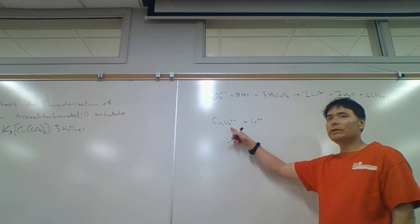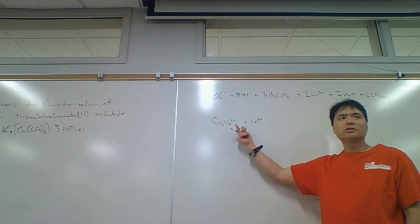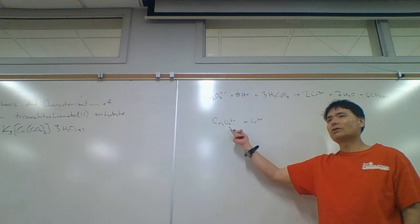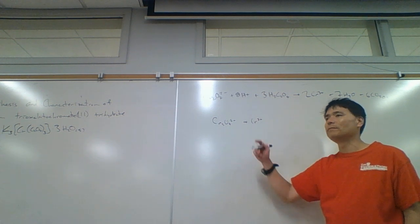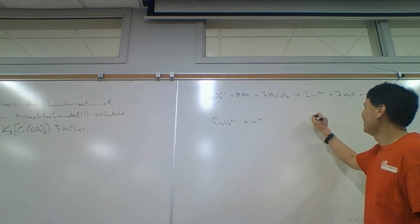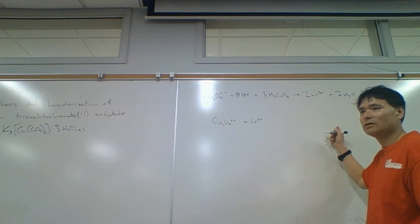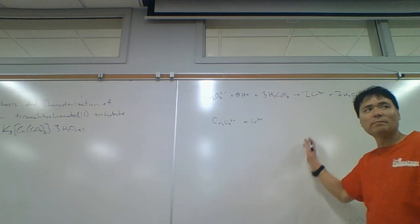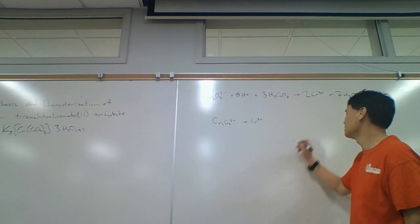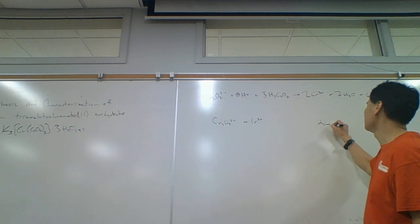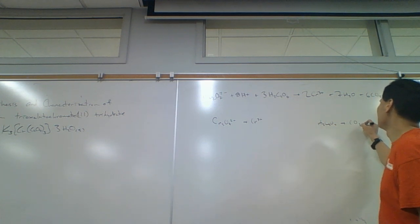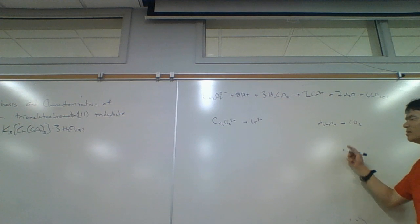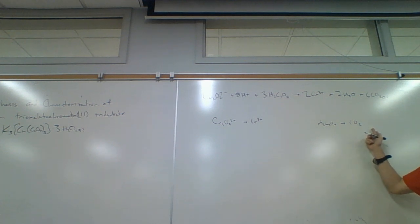Dichromate goes to chromium-3 is on our chart, so you could just copy it down: dichromate plus seven H⁺ plus six electrons. And then you did oxalic acid goes to CO₂ and balanced that one. It goes to two CO₂s plus two H⁺ plus two electrons.